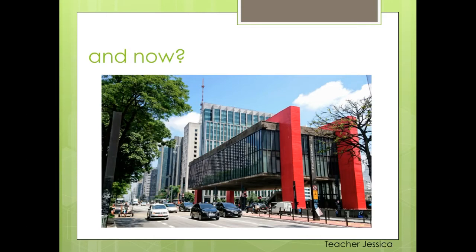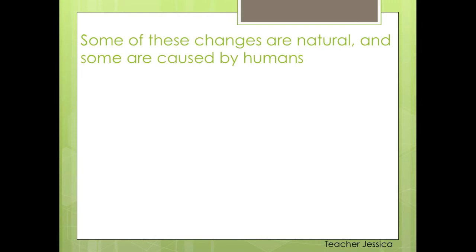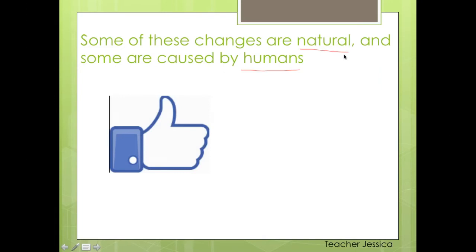Some of these changes that happen in the habitats are caused by natural change, and some are caused by human change. We have two different kinds — human and natural. And all of them are not simply good or simply bad; some are good and some are bad.